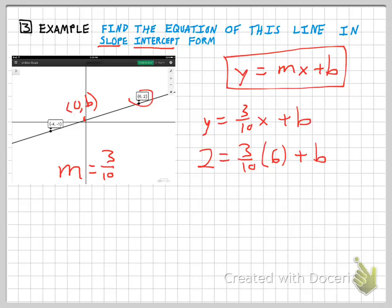If I cross-cancel here, I'm going to get a five and a three, so 2 equals nine-fifths plus b. And my value of b then is going to be 2 minus nine-fifths, that's going to be ten-fifths minus nine-fifths.